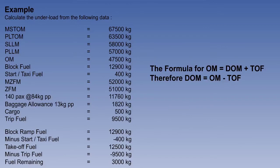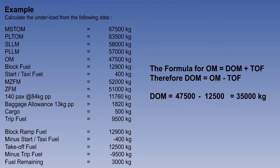Before we can find the limiting traffic load in step two, we must know the dry operating mass. We can use a formula from our previous lesson: operating mass equals dry operating mass plus take-off fuel. Rearranging, dry operating mass equals operating mass minus take-off fuel. Extracting the data from the table and subtracting the take-off fuel of 12,500 kilograms gives us a dry operating mass of 35,000 kilograms.